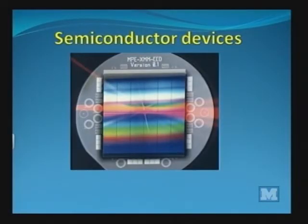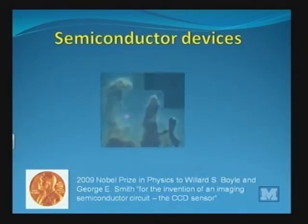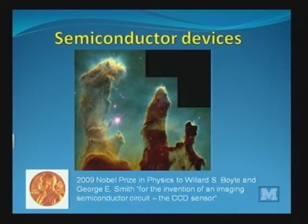Another example of a semiconductor device is a CCD — a charge-coupled device — used in astronomy. The 2009 Nobel Prize in Physics was shared in part by Willard S. Boyle and George E. Smith for the invention of an imaging semiconductor circuit, basically the CCD sensor. It's amazing technology, present in your digital cameras. It's really been our eyes in space — this is an image from the Hubble telescope taken with such a device. Not only is it nice for taking snapshots of friends and family, but it has also allowed for some amazing science.